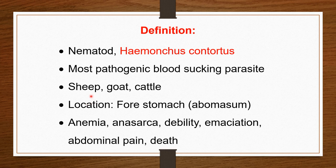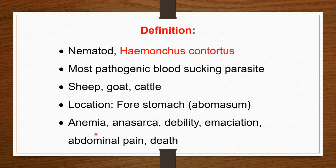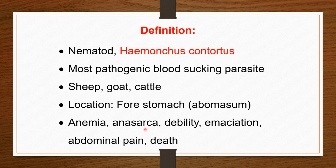The disease mainly affects sheep but also affects goats and cattle. The parasite is located in the fourth stomach, especially the abomasum. The disease mainly causes anemia because they are blood-suckers, and also causes hypoproteinemia due to great protein loss. There is digestive disturbance, abomasitis, progressive emaciation, abdominal pain, and in acute cases with large numbers of worms invading the animal, death can occur.